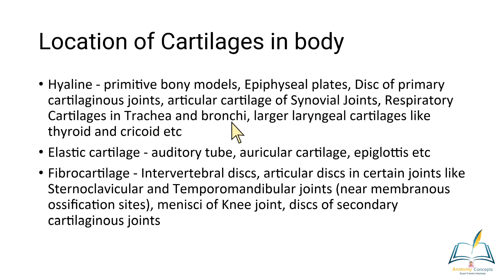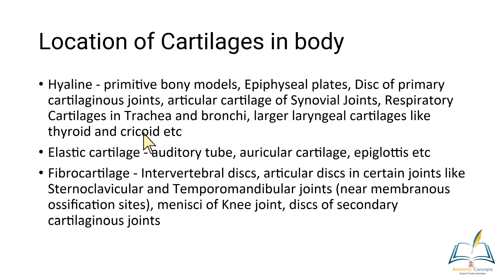Hyaline cartilage is also found in respiratory cartilages of the trachea and bronchi — trachea is a classical histology example of hyaline cartilage. Larger laryngeal cartilages like the thyroid and cricoid are also hyaline. Elastic cartilage is present in the auditory tube, auricular cartilage, and epiglottis.